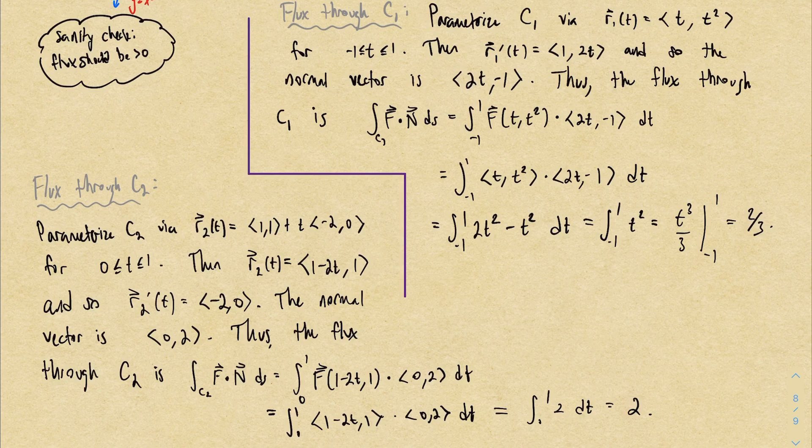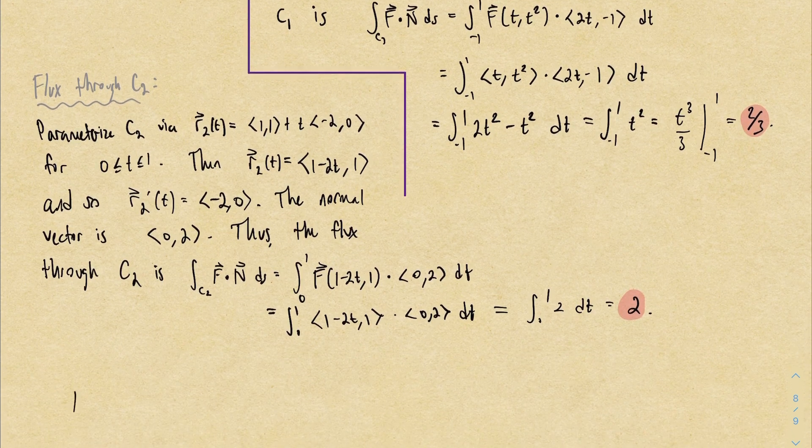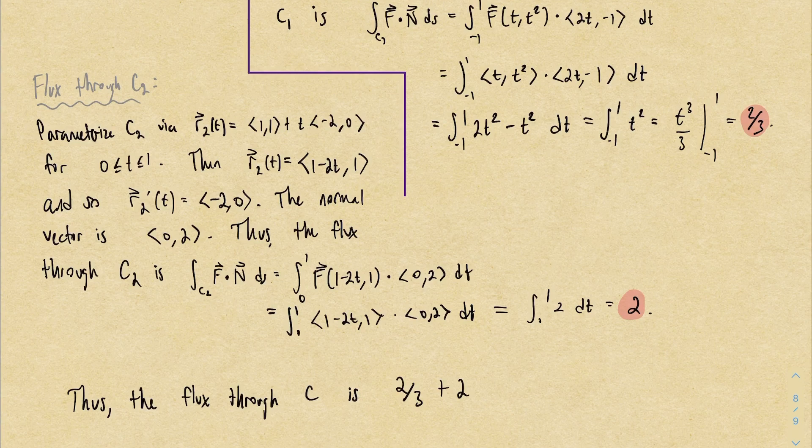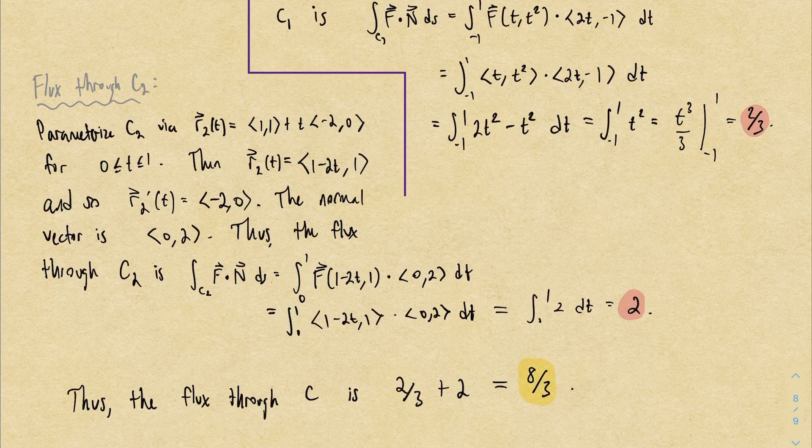And we're pretty much done. The flux through the whole curve is going to be the flux through C₁ plus the flux through C₂. So this is 2/3 + 2, which is 8/3. And like we suspected, we get some positive number.